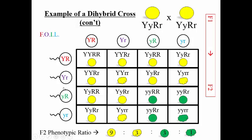If you always FOIL in the correct order, the double mutant will always appear in the bottom right of the grid. One single mutant pattern appears in its consistent location, and the other single mutant appears in its spot as well. This makes catching mistakes very easy, so I encourage you to FOIL in the correct direction.